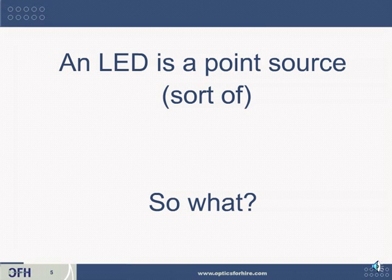One of the first and most obvious things about an LED is that it is basically a point source — at least when compared to a fluorescent light bulb or a traditional light bulb. It is sort of a point source because, unlike a laser, the light coming from an LED chip does spread in a beam pattern. So if you are designing a system where you're coupling an LED with fiber, you'll find it's a lot more challenging than it might be with a laser. But in general, an LED is basically a point source.